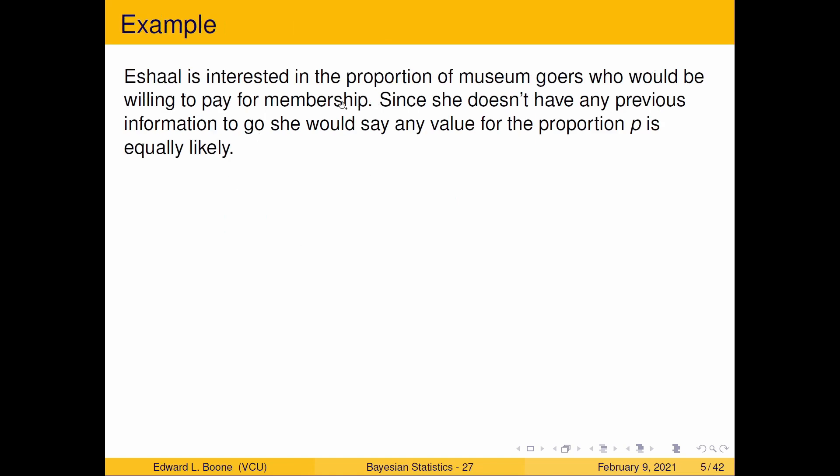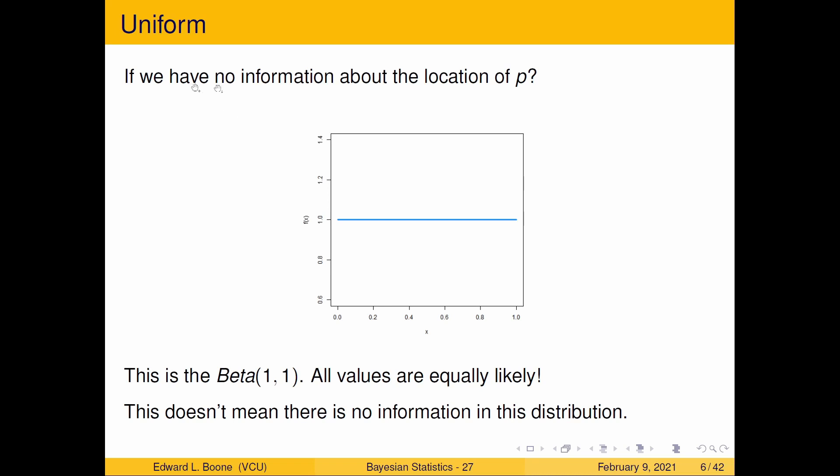So Eshaal is interested in the proportion of museum goers who would be willing to pay for membership. Since she doesn't have any previous information to go on, she would say that any value for the proportion p is equally likely. So that would be uniform. We have no information? Well, that seems reasonable. It's between 0 and 1. Every point is equally likely. Why not?